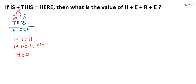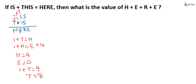If you add one to H, that is one plus nine equals ten. So the value of E is equal to zero, with one carry going forward. And since one plus T equals H and H equals nine, we get one plus T equals nine, so T is equal to eight.